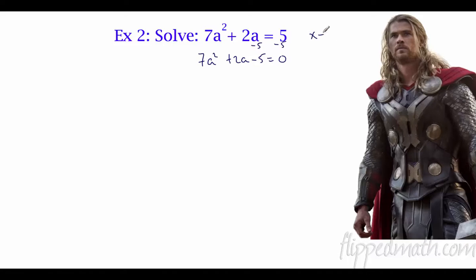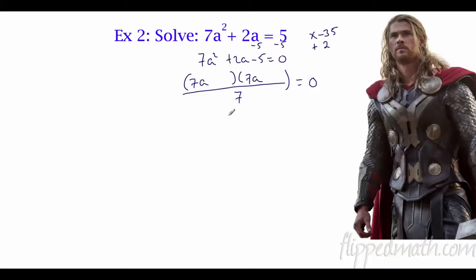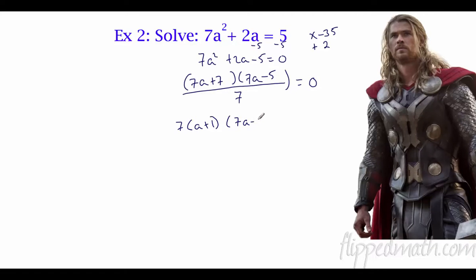What are my two numbers? I need to multiply to negative 35 — A times C — and I need to add to the middle, which is 2. We have 7a and 7a, and we have to put all over 7 because we know we have an extra factor of 7. Two numbers that multiply to negative 35 and add to 2: positive 7 and negative 5. Is there a common factor? Yes. So 7 times (a plus 1): 7a divided by 7 is a, 7 divided by 7 is 1. No common factors in the other group, so I'm just going to bring it down. These 7s are going to cancel, so we have our two factors.